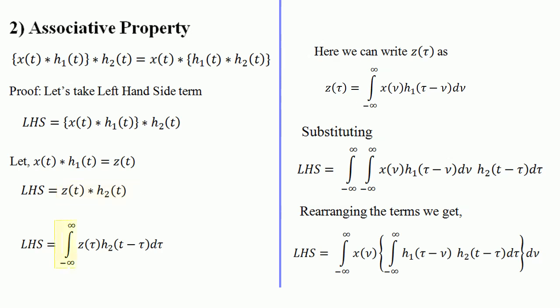Using the convolution formula, z(τ) convolved with h2 becomes the integral from −∞ to ∞ of z(τ) h2(t − τ) dτ. Here z(τ) is nothing but the convolution of x(t) and h1(t), which equals the integral from −∞ to ∞ of x(μ) h1(τ − μ) dμ. Substituting this value of z(τ), LHS becomes the double integral: ∫∫ x(μ) h1(τ − μ) dμ · h2(t − τ) dτ.